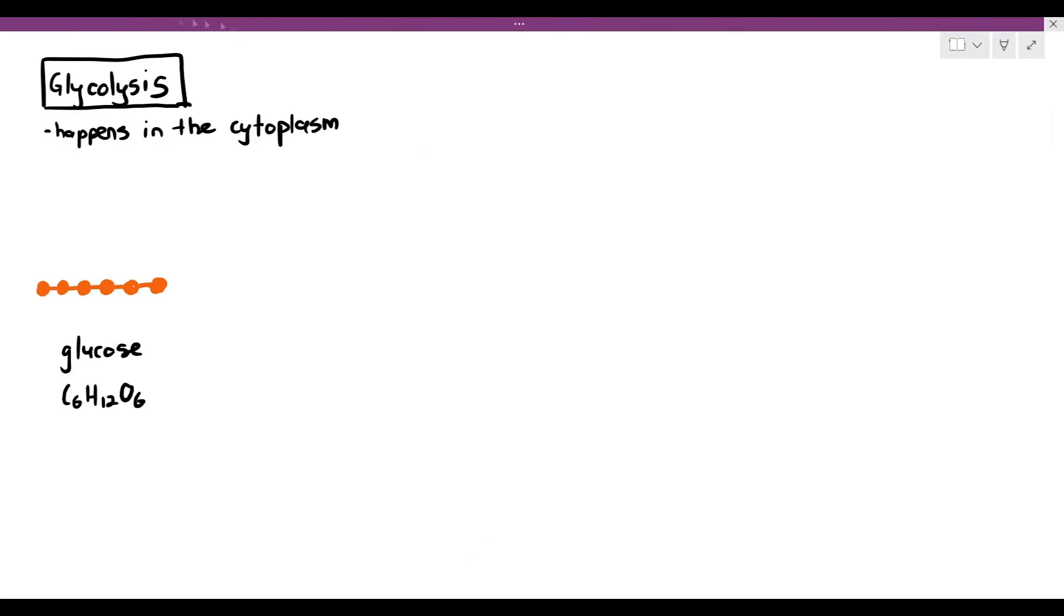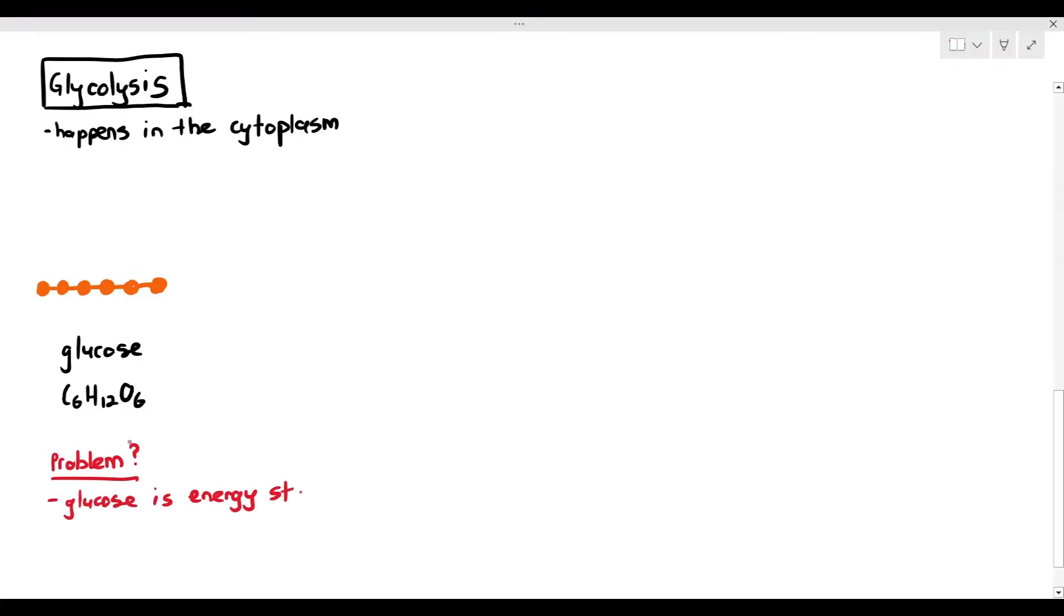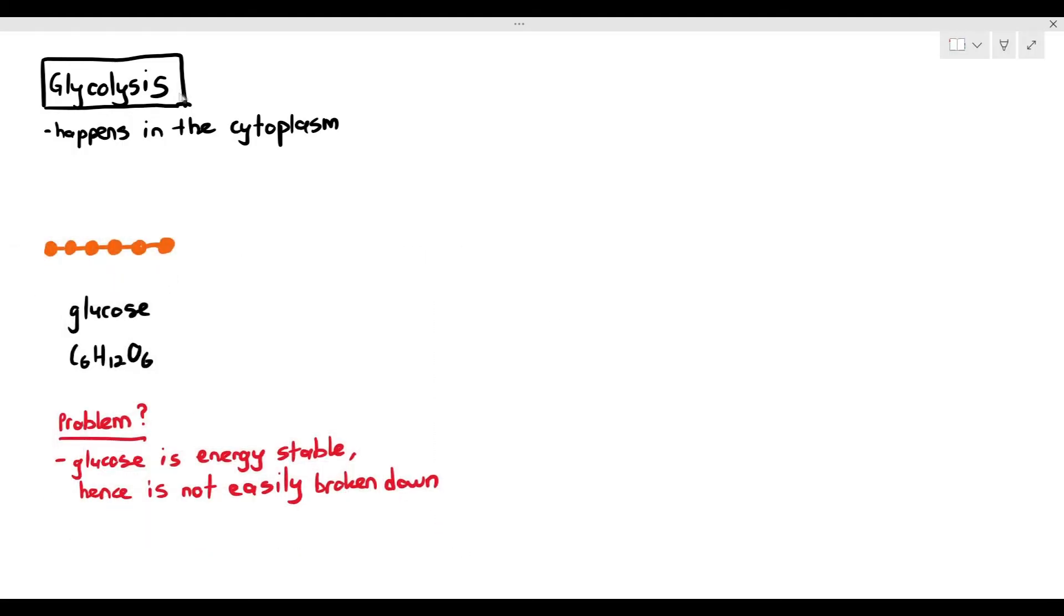Before glycolysis begins, we have a problem. You want to break down the glucose molecules—that's what respiration is all about. But the problem here is glucose is quite energy stable, meaning it is just not easily broken down. You want to break something down, but it's not easy to break down the glucose molecule. That is why glucose is referred to as an energy storage molecule. It is different from ATP because ATP can easily be hydrolyzed, but glucose isn't.